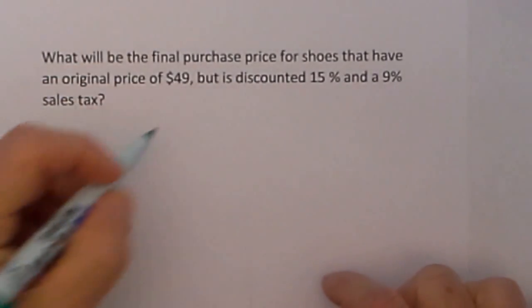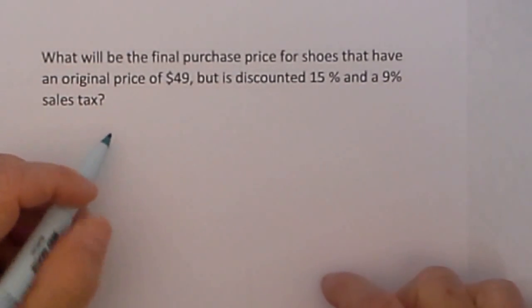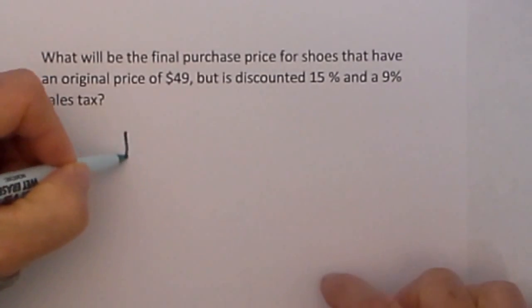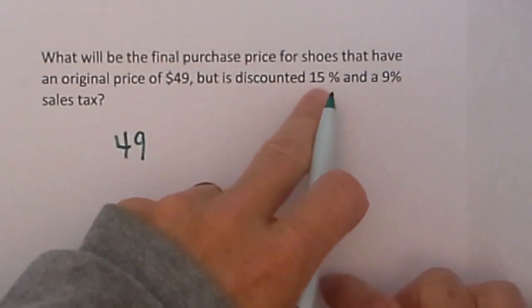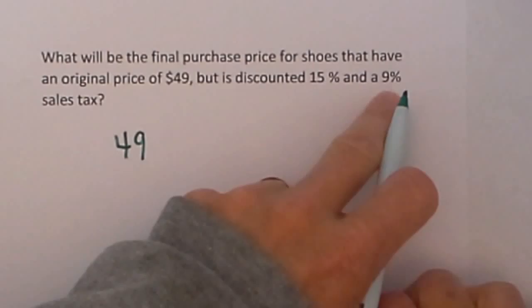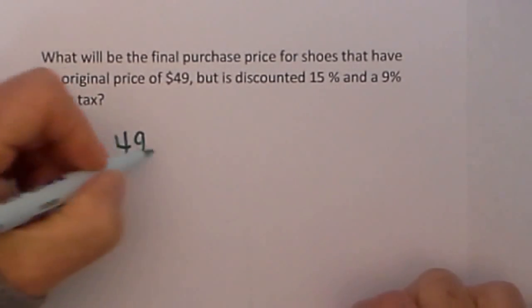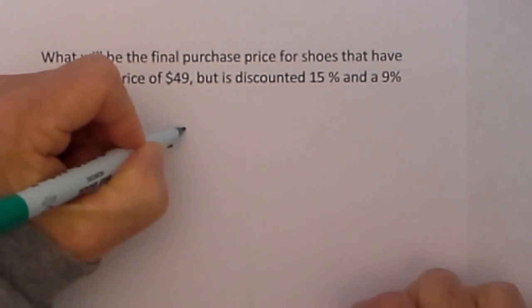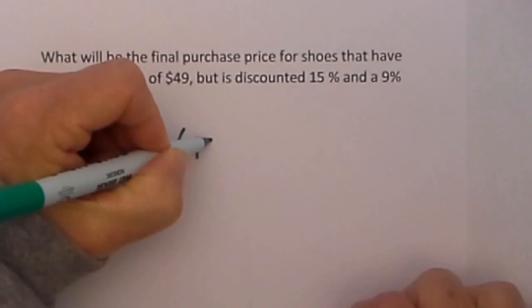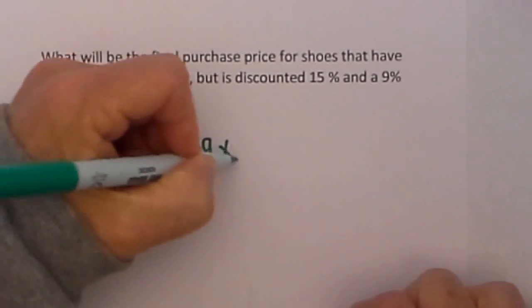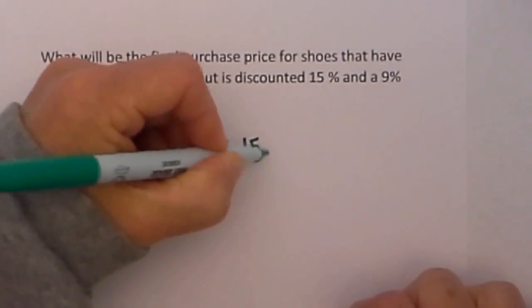Let's go ahead and work this second example. What would be the final purchase price for shoes that have an original price of $49 discounted 15% and a 9% sales tax? So I take 49 minus the original price of $49 times 0.15.